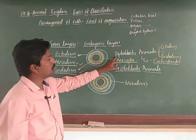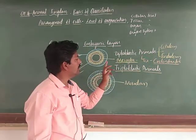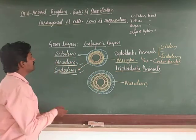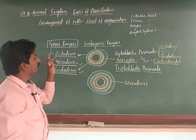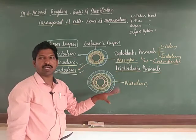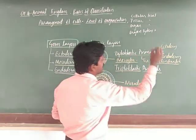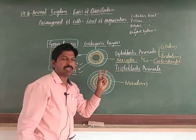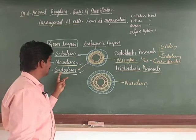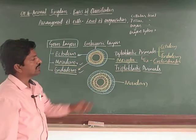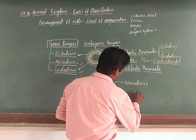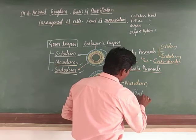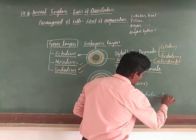If the animal shows two layers, it is called a diploblastic animal. If the animal shows all three germ layers — ectoderm, mesoderm, and endoderm — it is called a triploblastic animal. For diploblastic animals, the example is cnidarians, like Hydra. For triploblastic animals, examples include platyhelminthes to chordates — tapeworm, liver fluke, earthworm, insects, and even humans, since we are chordates.